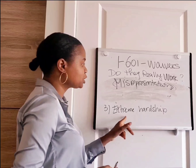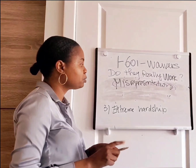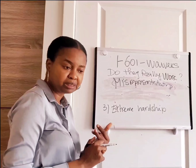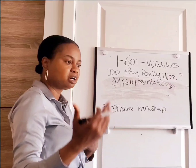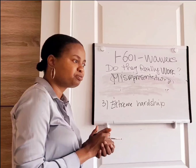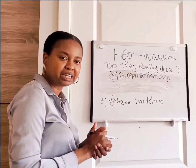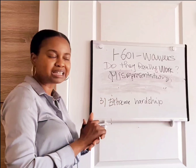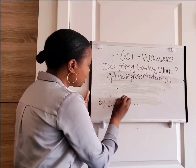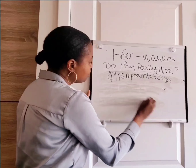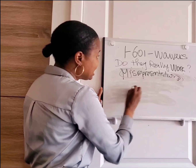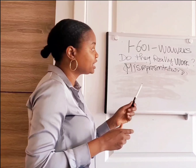Once you have one of those qualifying relatives, the third thing is proving extreme hardship. Hardship can be based on financial hardship, the fact that the qualifying relative is sick, family reunification to keep the family together, or emotional distress. That's where we go into the case evaluation, ask you a lot of questions, and come up with an argument on extreme hardship — then you apply and hope that the waiver gets granted.